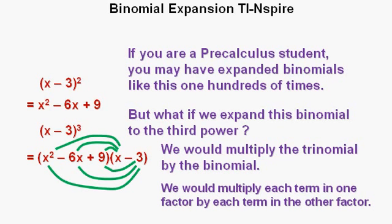And using the distributive property of algebra, we would multiply each term from one factor by each term in the other factor as shown here with the green connectors. After distributing and simplifying, we would get X cubed minus 9X squared plus 27X minus 27.